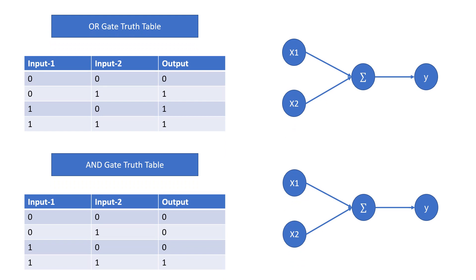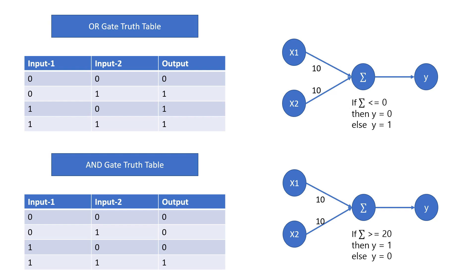Similarly, for the OR gate and AND gate we have built this perceptron. For OR gate and AND gate we require two inputs and one output. The weights are 10 and 10. Because of these weights, the summation value for input (0,0) is zero, for (0,1) it is 10, for (1,0) it is 10, and for input (1,1) it is going to give a summation value of 20.